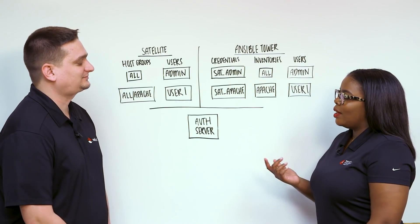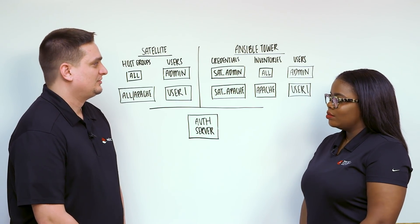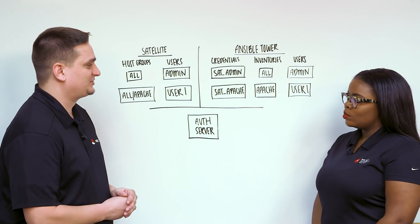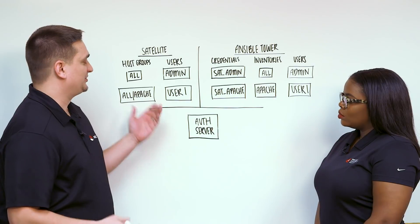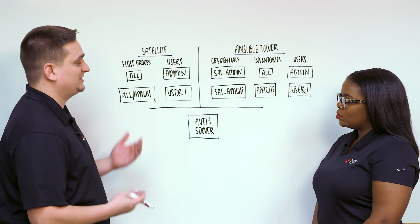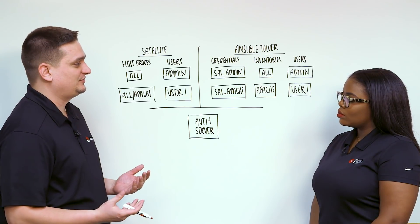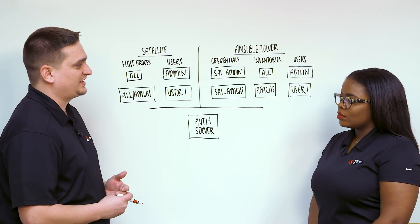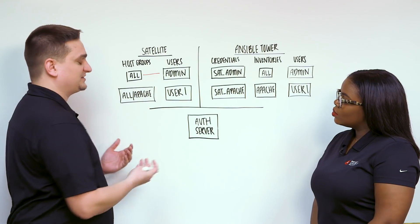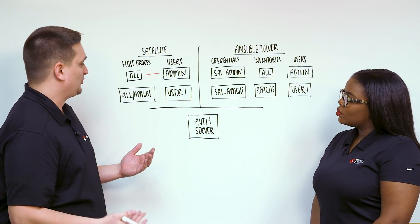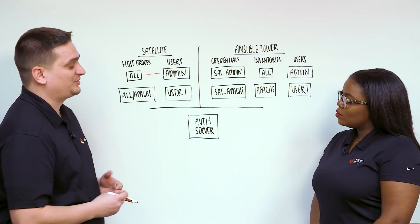You just mentioned using satellite-based inventories. Can you explain that process? So the first thing we're going to do is establish a line of communication between them. In our Satellite example today we have two users, an admin and a user one. Our admin user is going to tie into a host group that has access to everything so they can manage the entire environment. In our second example for user one, we're going to point them at a very specific application — in this example it's going to be Apache.